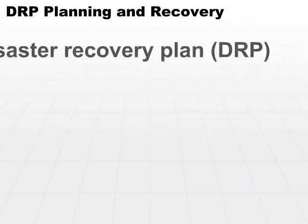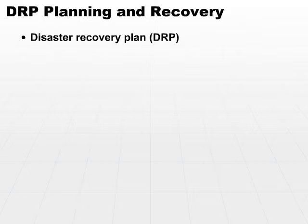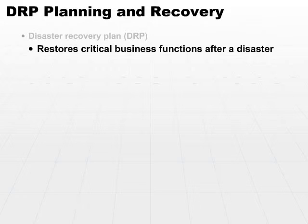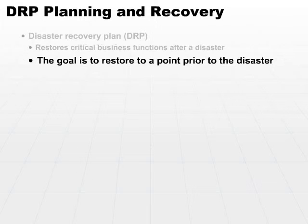First off, let's position the DRP. The Disaster Recovery Plan is intended to restore critical business functions after a disaster. It assumes that the critical business functions are not continuous — they have been interrupted, so we need to restore those functions after some sort of disaster. The goal is to bring us back to a point prior to the disaster.